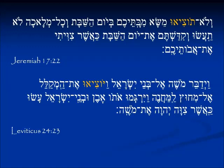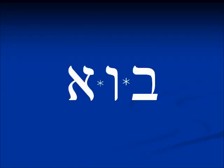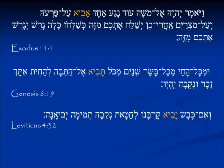Looking at a hollow verb: bet-vav-aleph — in the Pa'al, 'to come'; in the Hifil, 'to bring.' In the present tense, you remember that the vav is gone and the yud infix takes its place, so the present tense 'he will bring' is mavi. We see a similar formation in the imperfect tense.